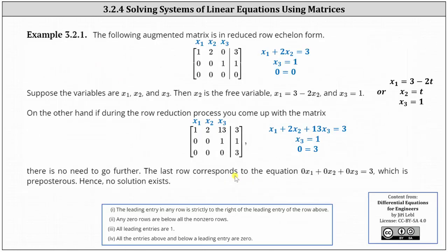Let's look at one more example. The following augmented matrix is in reduced row echelon form. The first row indicates x1 plus 2x2 equals 3. The second row indicates x3 equals 1. Notice in the third row we have a row of zeros, indicating 0 equals 0, which is always true — so we have an infinite number of solutions. Also notice we don't have a leading 1 in the x2 column, indicating x2 is a free variable that can take on any value. We can express the solutions as x1 equals 3 minus 2x2 and x3 equals 1. Or we can let x2 equal t, giving x1 equals 3 minus 2t and x3 equals 1.